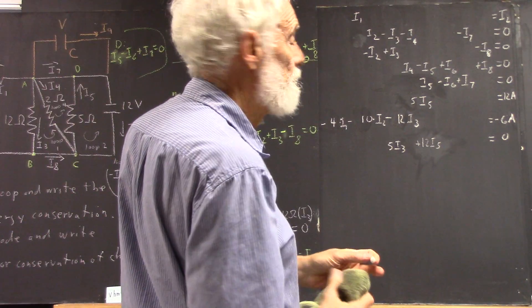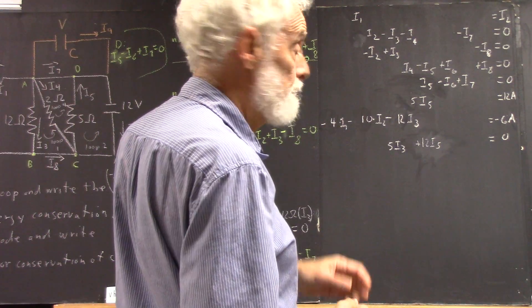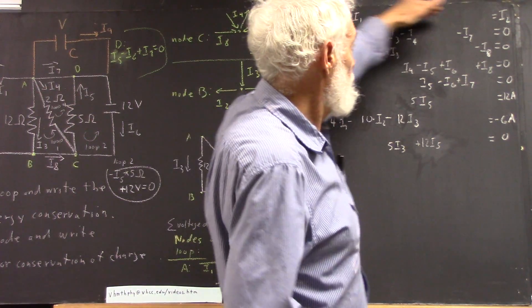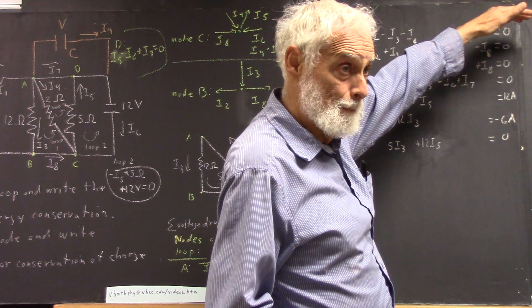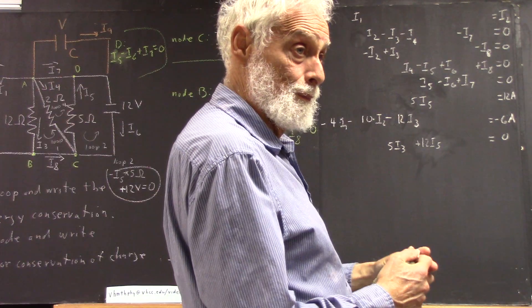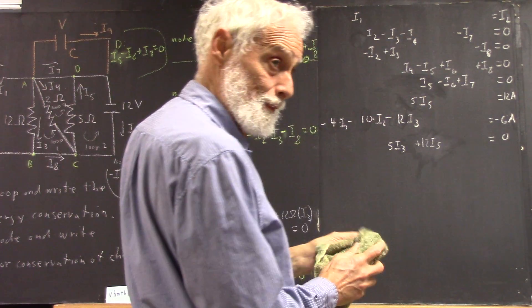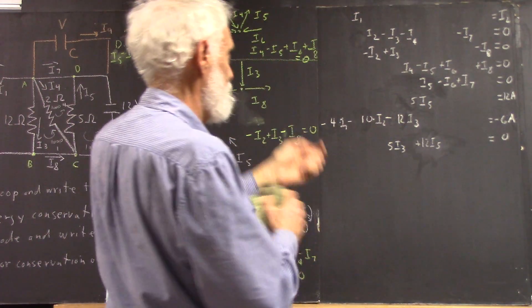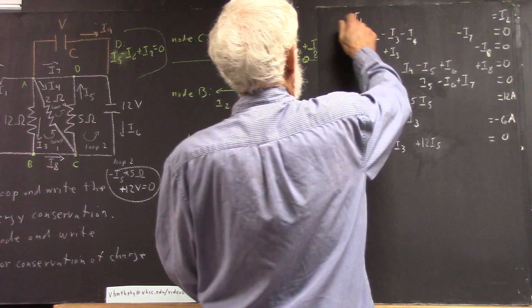Okay, now we see that that eliminates the first equation essentially. Okay, because I've used that information. So now I've only got seven variables, and I just kind of cross out the first equation.